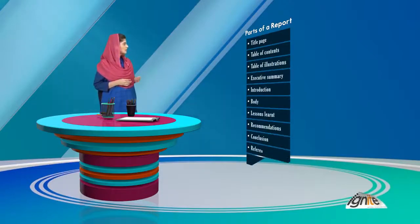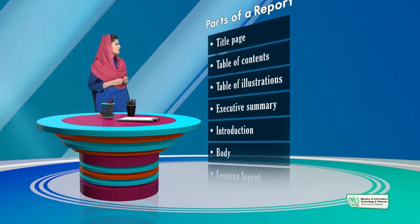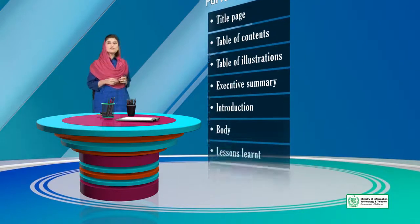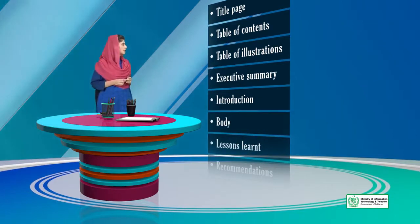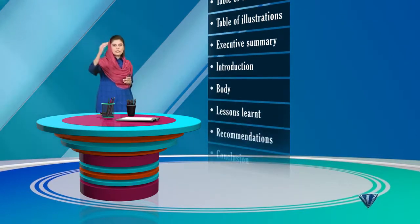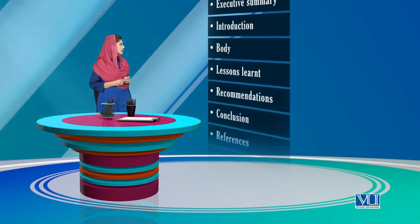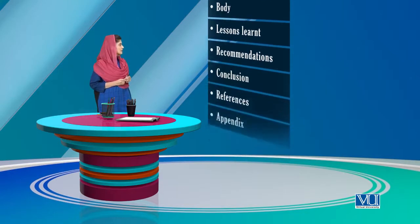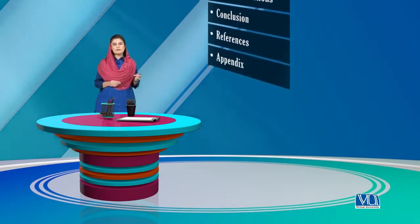You can see there is a long list. There should be a title page, table of contents, table of illustrations, figures, graphs, diagrams, etc. There should be an executive summary in which you will have an idea of the reading. Then introduction, main body, lessons learnt, recommendations, conclusions, references, and appendices.